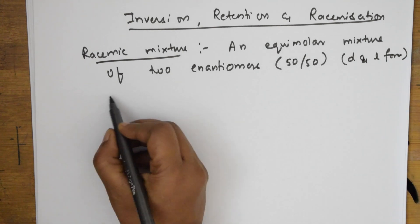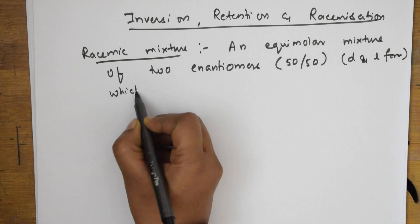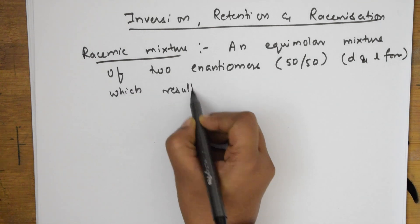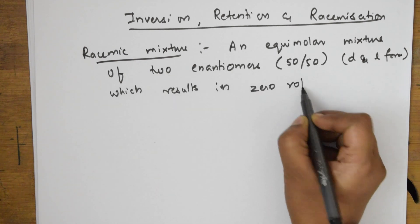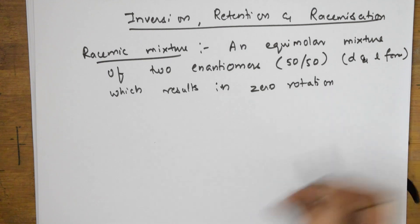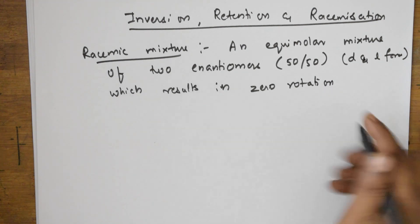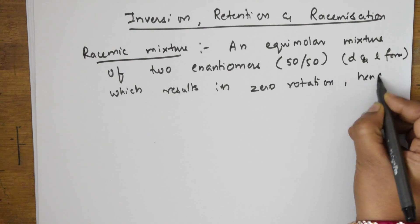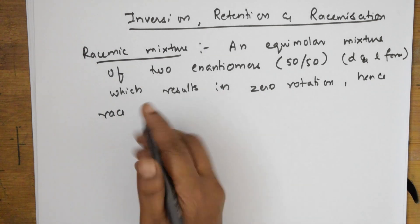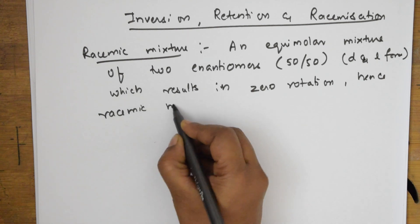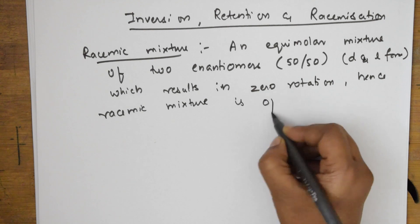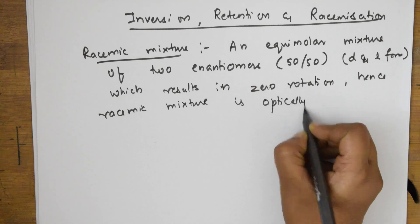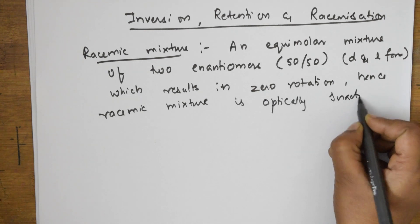The mixture of these results in zero rotation. Because of this, the racemic mixture is optically inactive because they have got cancelled.